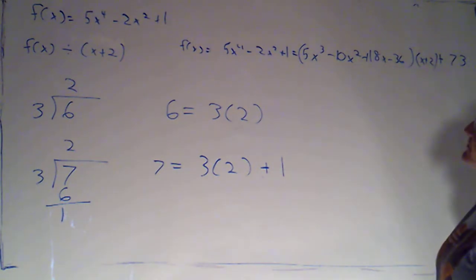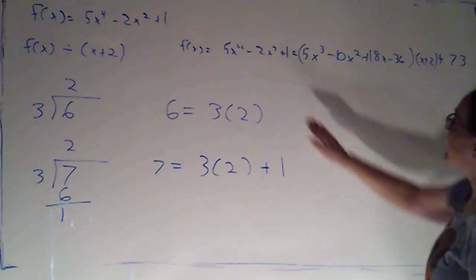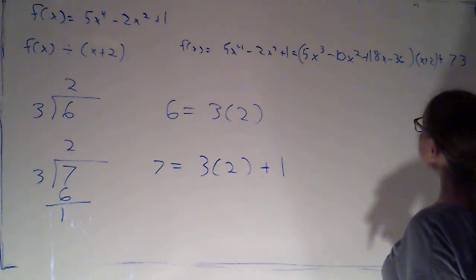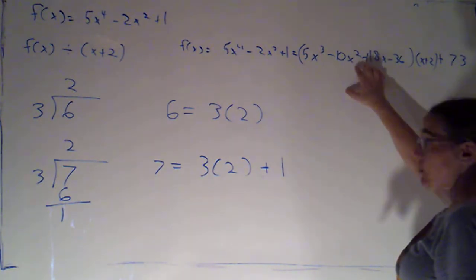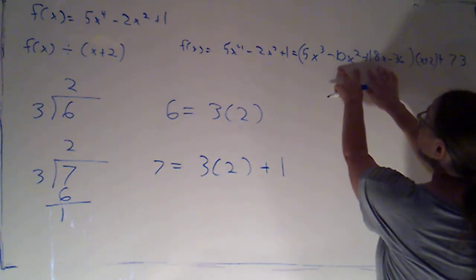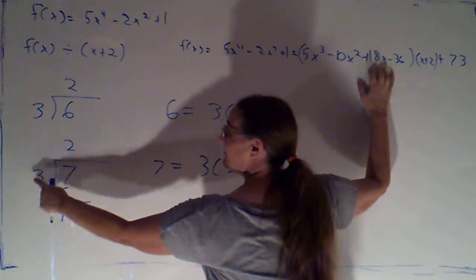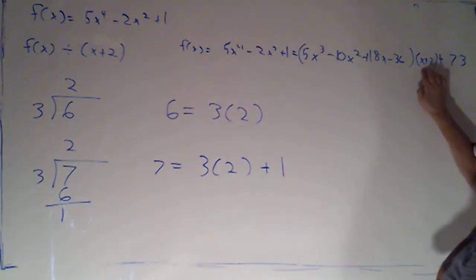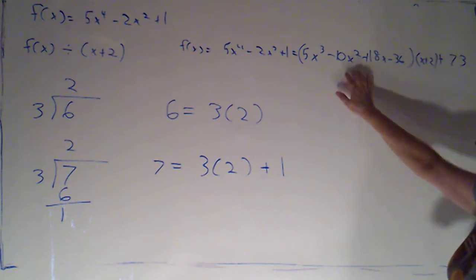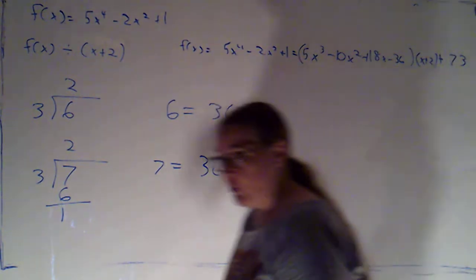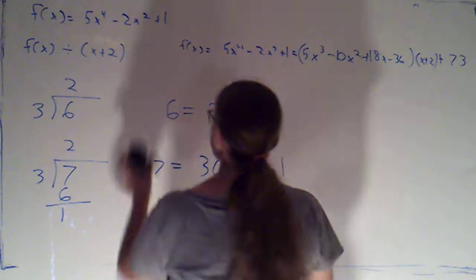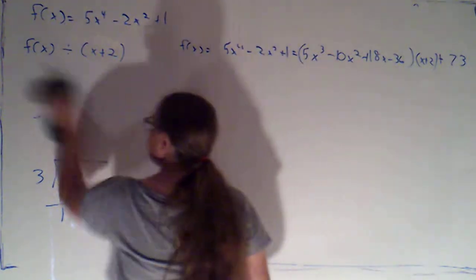So that's essentially what we've done here. We've said f of x is equal to this quotient that we got. This essentially is in the role of the 2. That's what we got when we divided by x plus 2. So it's the product of what we were dividing by and what we got plus the remainder. Now, interesting thing to point out.